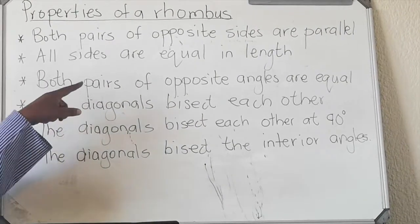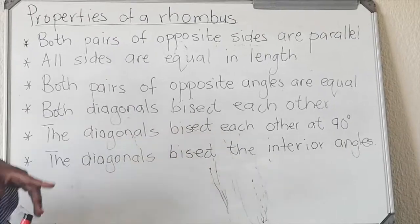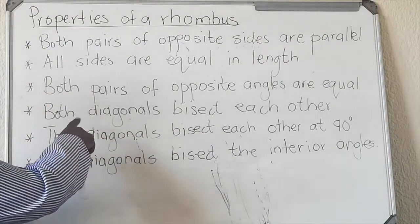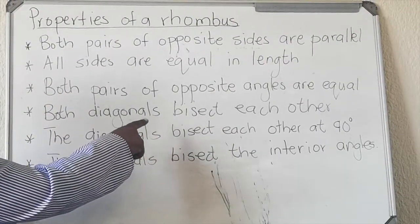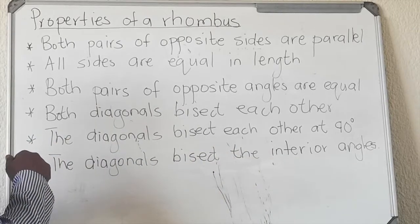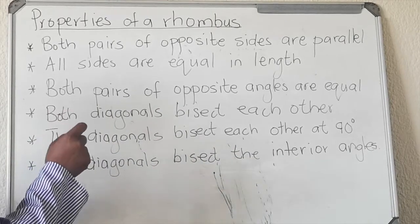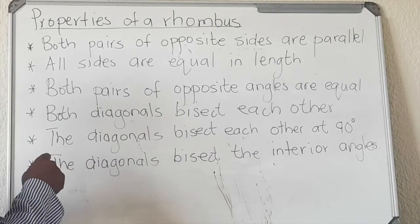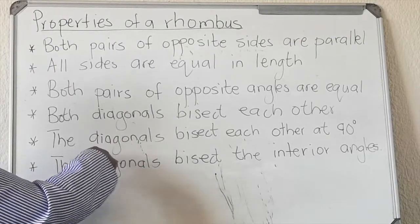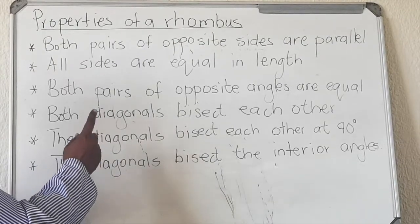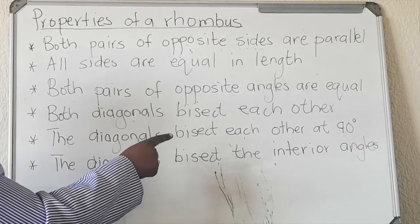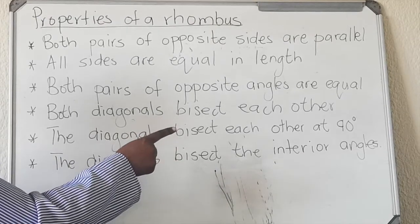The next property: both pairs of opposite angles are equal. Then the diagonals bisect each other. The diagonals of a rhombus bisect each other. This one is specifically for a rhombus: the diagonals bisect each other at 90 degrees.